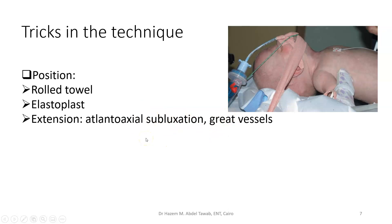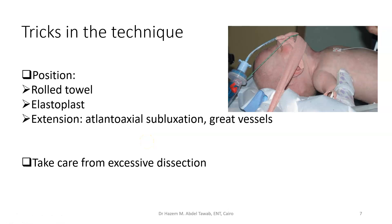Work in the center, just away from the suprasternal notch to avoid the great vessels. One important tip is to avoid excessive dissection, because the trachea in a child is very near. Going for more and more dissection without reaching the trachea means you have missed it. You need to feel the trachea all the time — every single step, put your finger and feel the trachea. If you have missed it and done excessive dissection, you have gone either right or left of the trachea.